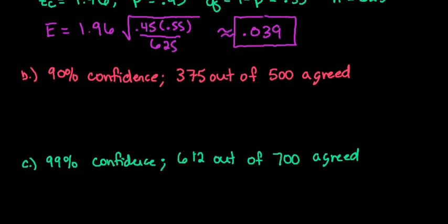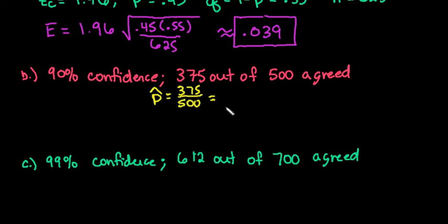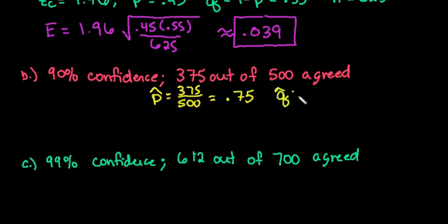Sometimes instead of giving p-hat as a percentage, you are given a number of successes out of the total. To find p-hat we do 375 over 500. This ends up being a nice concise decimal: 0.75. Q-hat is 1 minus p-hat, giving us 0.25.